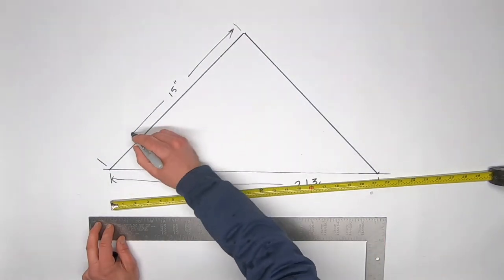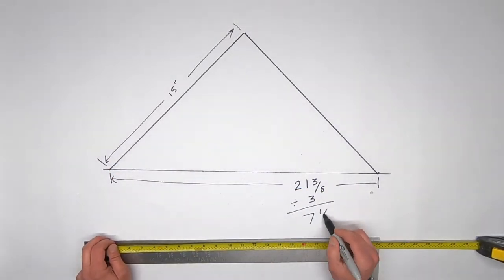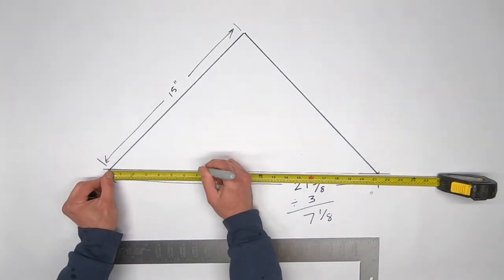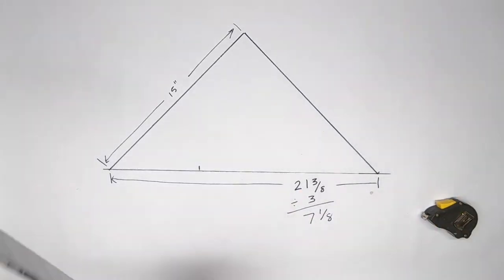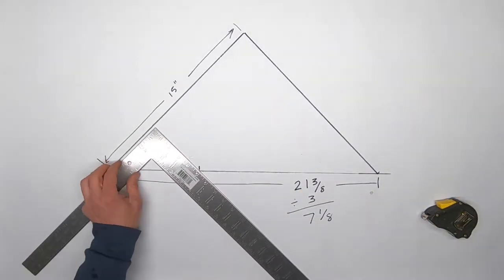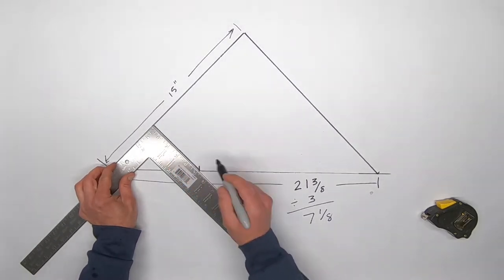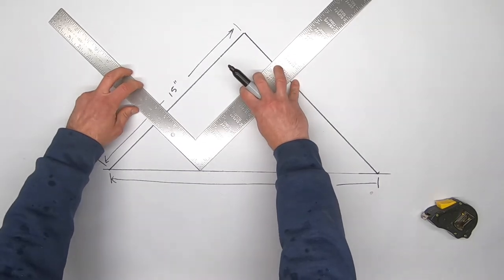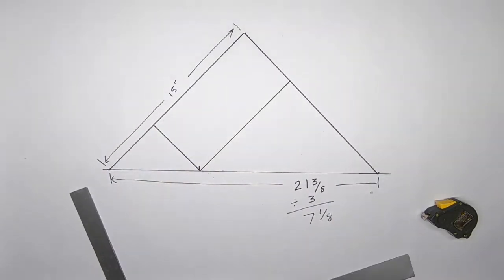Since this pantograph is a three to one ratio, I'll divide the length of the hypotenuse by three. 21 and 3/8 divided by 3 equals 7 and 1/8, which I mark from the left side. I then draw a perpendicular line from the left leg intersecting the 7 and 1/8 mark on the hypotenuse. I'll then draw another perpendicular line from the line I just drew and intersect it with the right leg of my triangle.